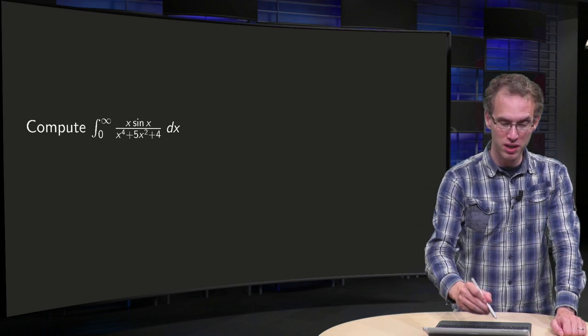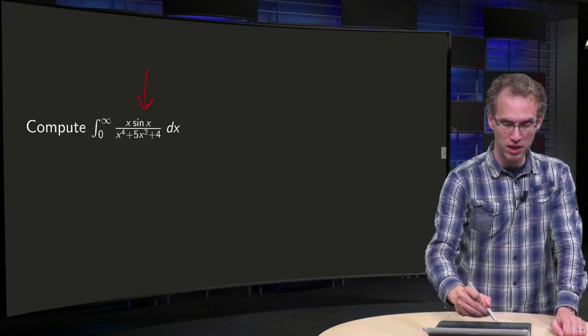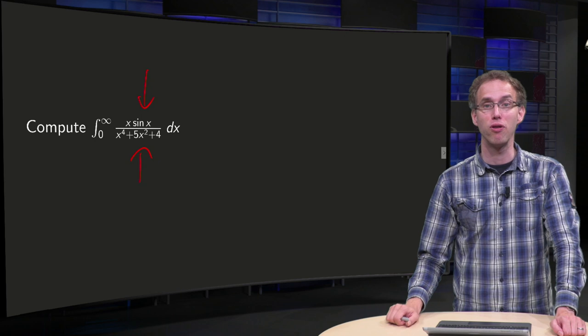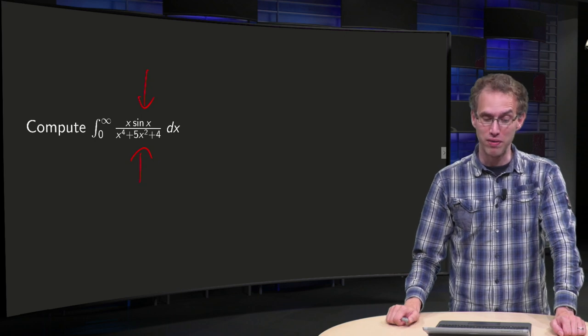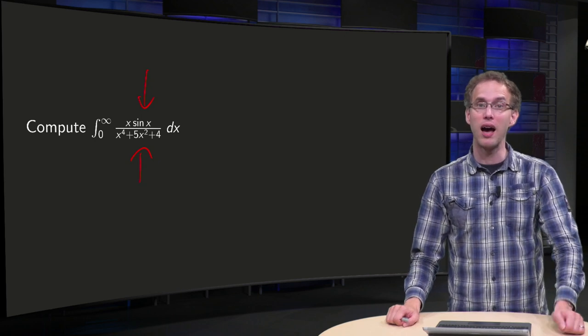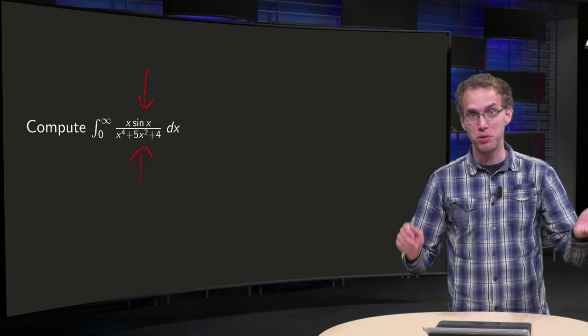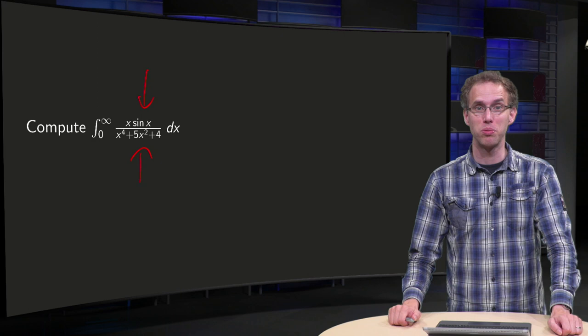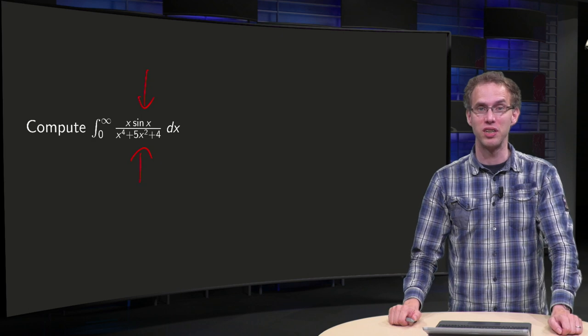So we have our function: x times sin(x) divided by x to the power 4 plus 5x squared plus 4, and we want to compute this integral using some complex functions.